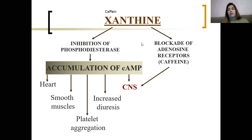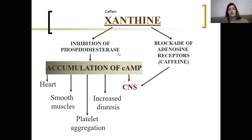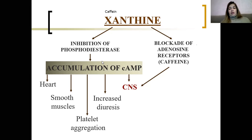Caffeine has a different mechanism. First, blockade of adenosine receptors, and second, inhibition of phosphodiesterase. Anyway, this leads to accumulation of cAMP in the CNS.